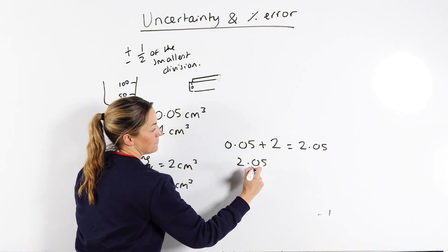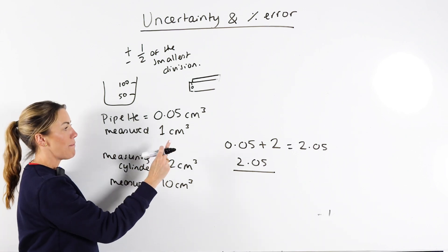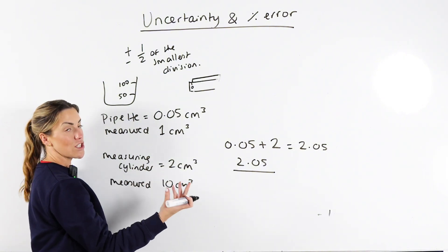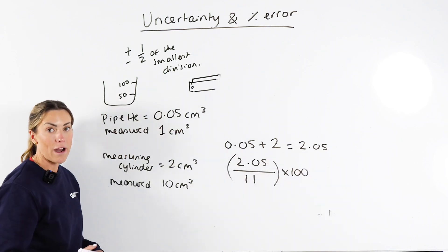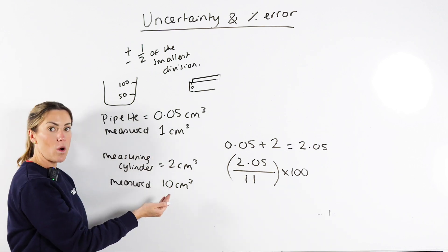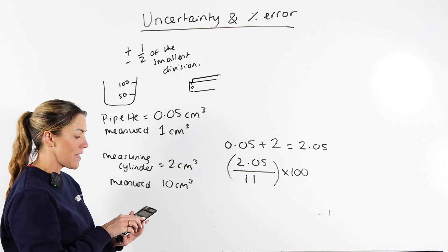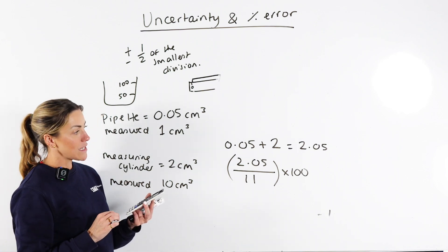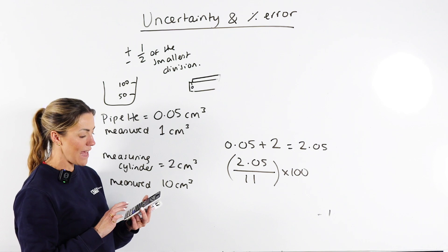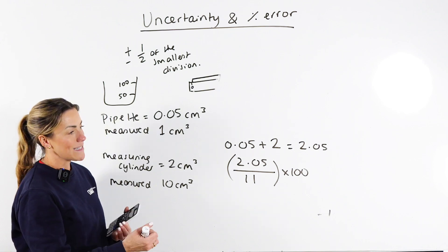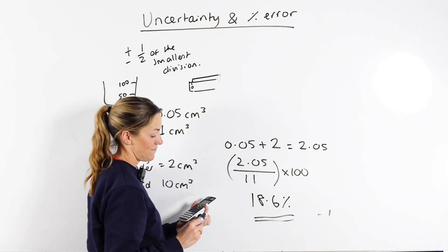On the bottom we add together the quantities measured: 1 centimeter cubed from the pipette and 10 centimeters cubed from the measuring cylinder, giving a total of 11 centimeters cubed. So we're doing exactly the same as before — uncertainty on top, quantity measured on the bottom — but this time we've added both uncertainties and both quantities. So 2.05 divided by 11, multiplied by 100, gives a percentage uncertainty of 18.6 percent.